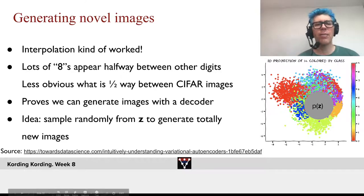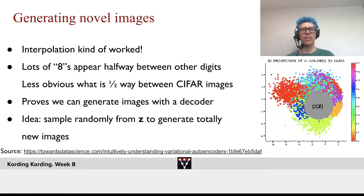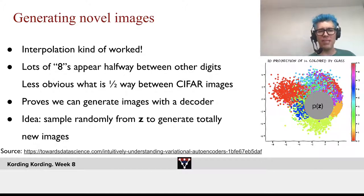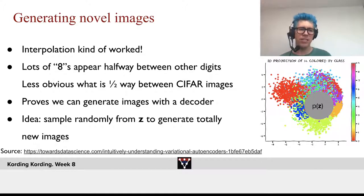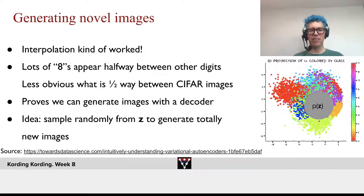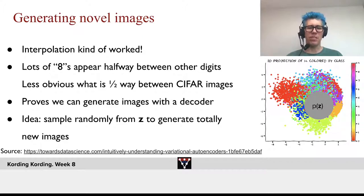Let's talk a little bit about the generation of novel images. As you saw, interpolation in a way kind of worked. Lots of 8s appear halfway between other digits. It's less obvious what happens halfway between CIFAR images. And it shows that we can generate images with a decoder.